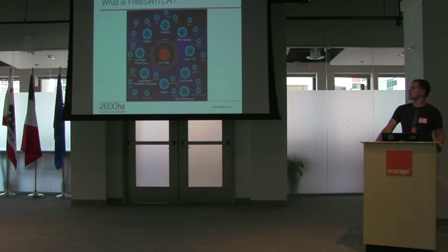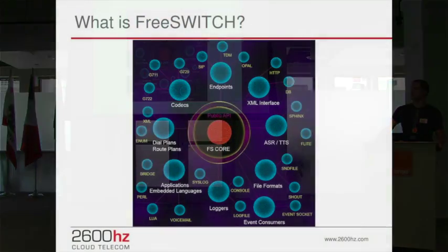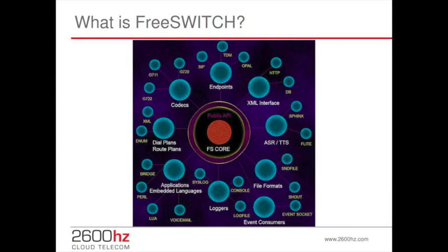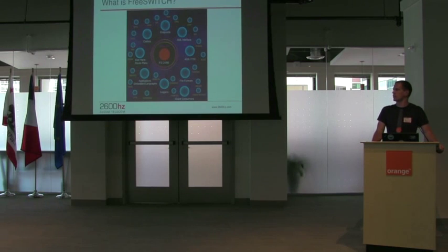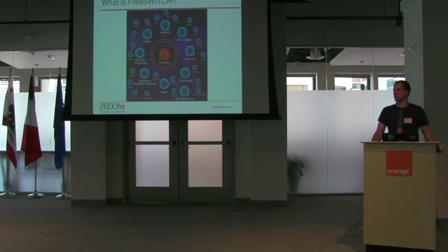FreeSWITCH is architected similarly to how Kazoo is done — you have the core, which is kept small, and then a public API system for modules to hook into. FreeSWITCH has a very nice event bus; it is an event-driven soft switch, which made tying it into Kazoo and AMQP natural, easy, and straightforward. There's not a lot of impedance mismatch because it's all events flowing around.